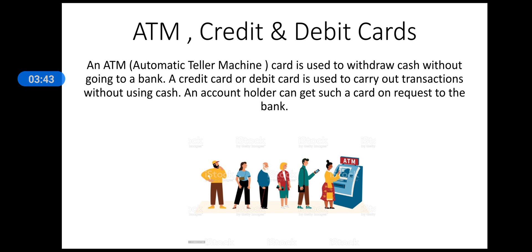Another few important things are ATM and credit and debit cards. An ATM, automatic teller machine, card is used to withdraw cash without going to a bank. A credit card or debit card is used to carry out transactions without using cash. An account holder can get such a card on request to the bank.